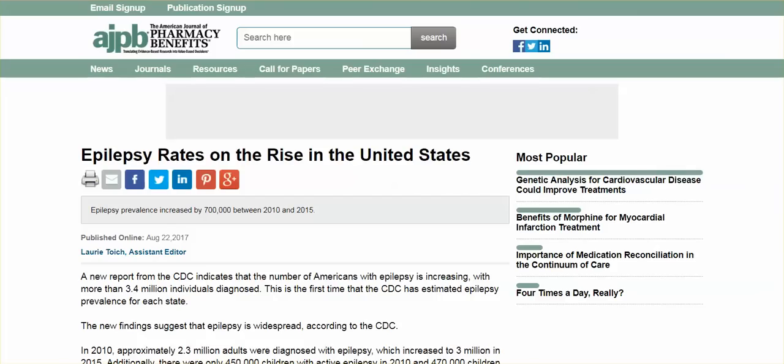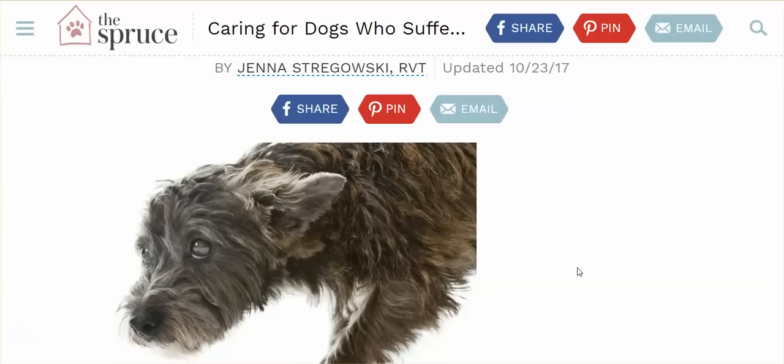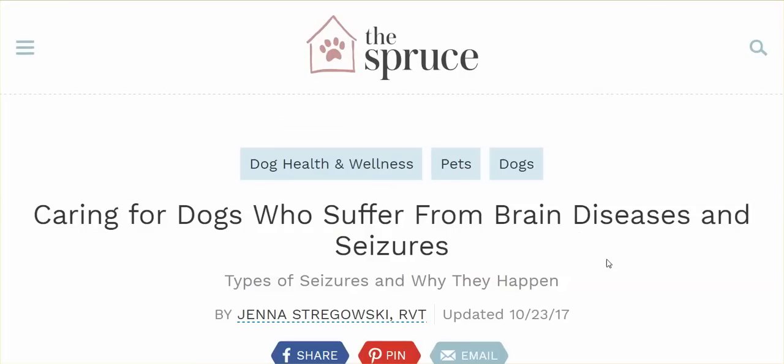I tried to find stats on domestic animals, dogs, cats having seizures, but based on all of the articles out there, I will say that dogs and cats having seizures, that too is on the rise. Why?